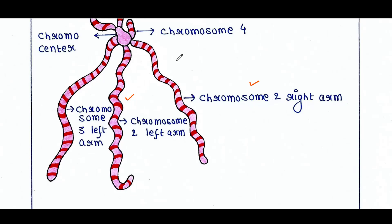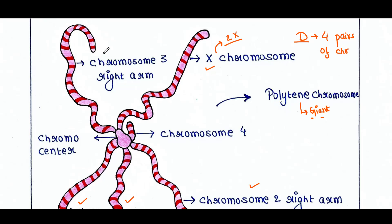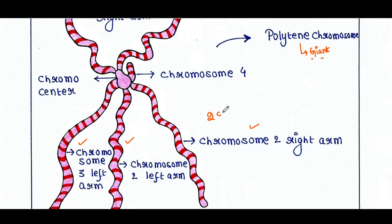Next is chromosome number 3 — you can see chromosome number 3 left arm and chromosome number 3 right arm. Here also, chromosome number 3 contains two homologous chromosomes together. And this is chromosome number 4, which is the smallest chromosome you can find here, and it also has two chromosome number 4 together.